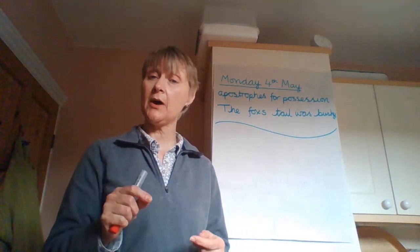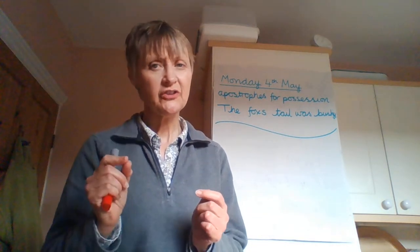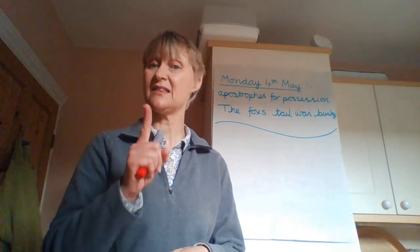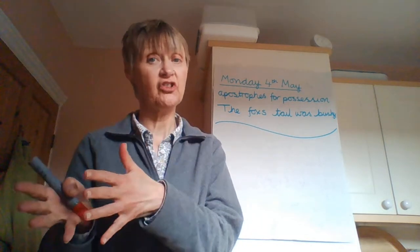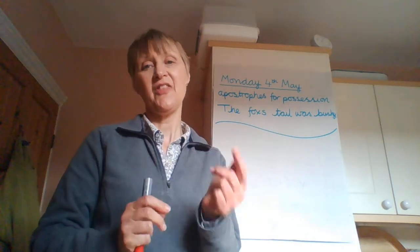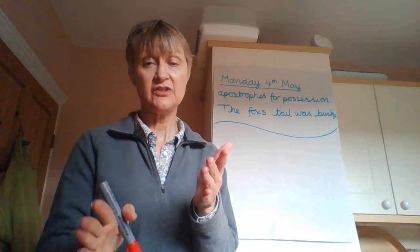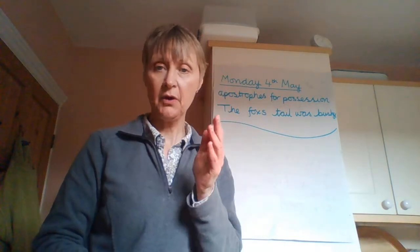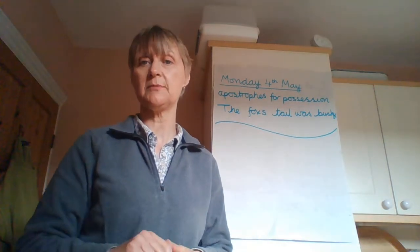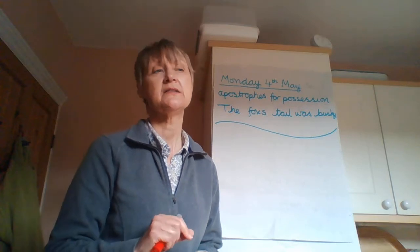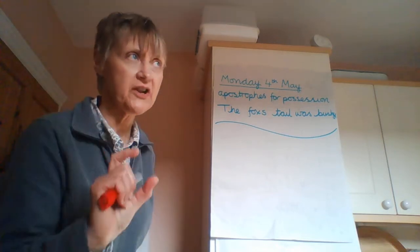So at the moment we're thinking about an owner that has no S on the end. Usually they are singular nouns. That means there's only one of them, but it's not always the case because sheep can be one sheep or lots of sheep and that doesn't have an S on the end. So if we just think about has the noun got an S on the end? No. Then we put an apostrophe and then our S. So that's the rule we're thinking about today. Tomorrow we're going to move on to a slightly different rule. So apostrophes for possession when we've got a noun with no S on the end.